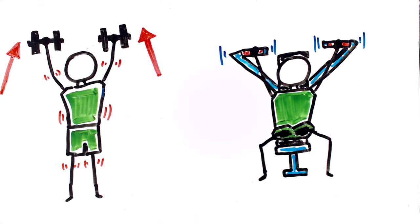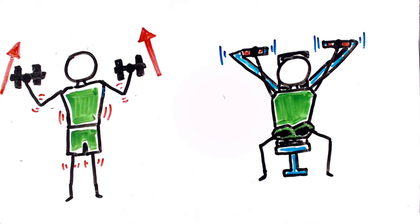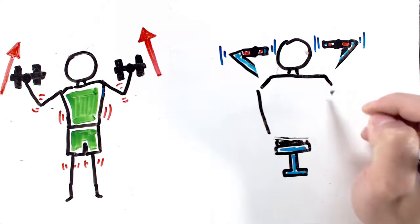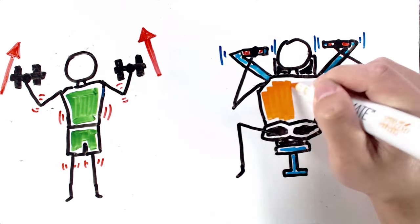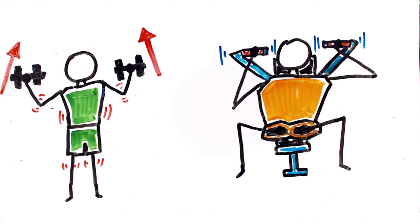Free weights also let you follow a natural bar path, meaning you can move the weight in a pattern that comes natural to you, making it great to replicate functional real life movements. Machines are usually made for the average sized person with limited adjustment options, making the movement pattern uncomfortable and restricts range of motion for people that don't fit the machine's size.